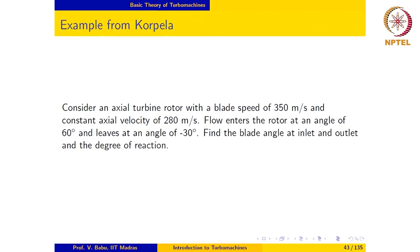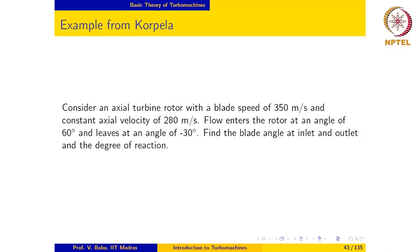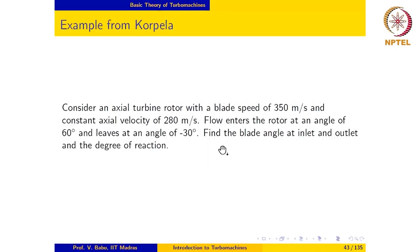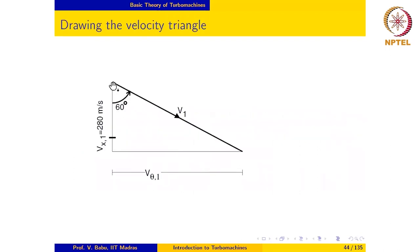The first step, as we did in the previous example, is to construct the velocity triangle using the given information. The flow angle at the inlet and the axial velocity are given. The flow angle is given to be plus 60 degrees, which means that the inlet absolute velocity vector is at an angle of 60 degrees in the counterclockwise direction from the reference direction, which is the axial direction.